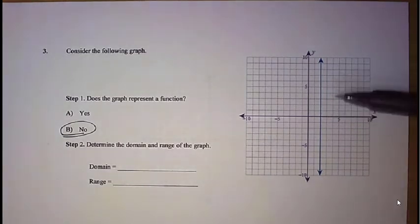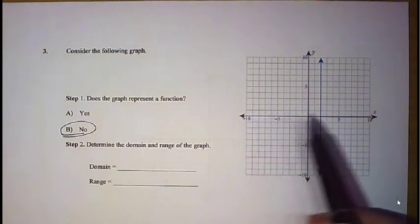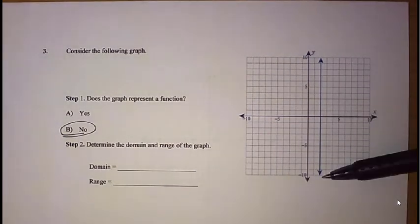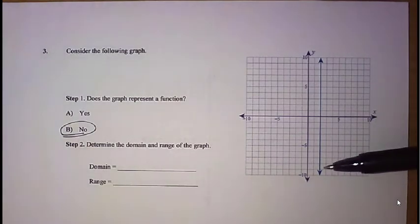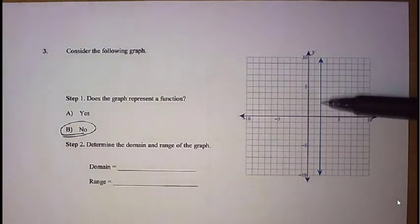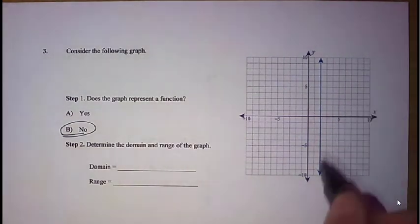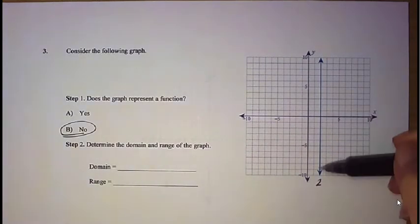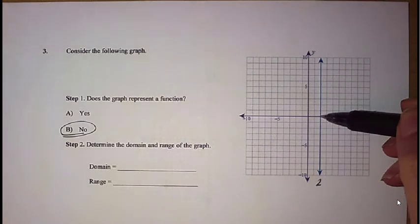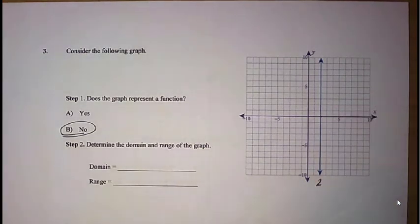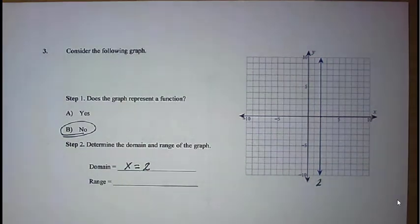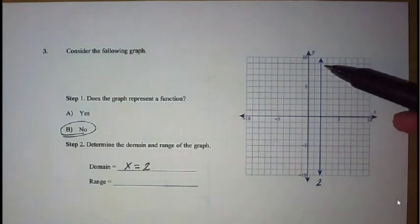Now, as far as the domain, remember, again, domain is what values along this x-axis are being used by our graph. Well, in this particular instance, there's only one value being used by our x's, and that is the value 2. That's the number that this line sits on as far as our x value is concerned. The way that we're going to write that with our domain is we're going to say that x equals 2.